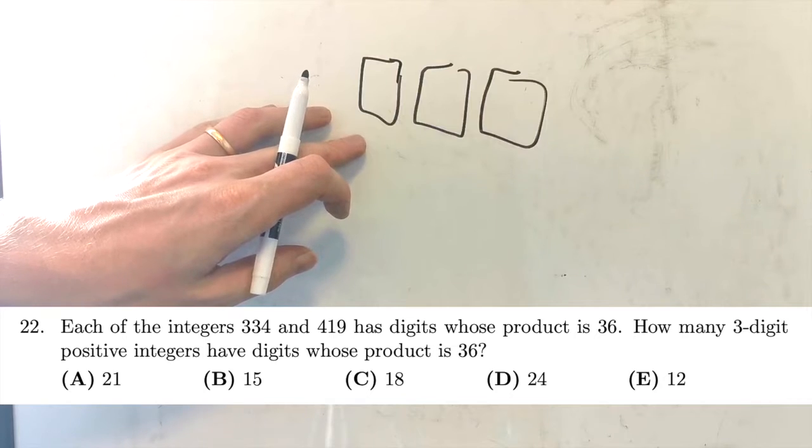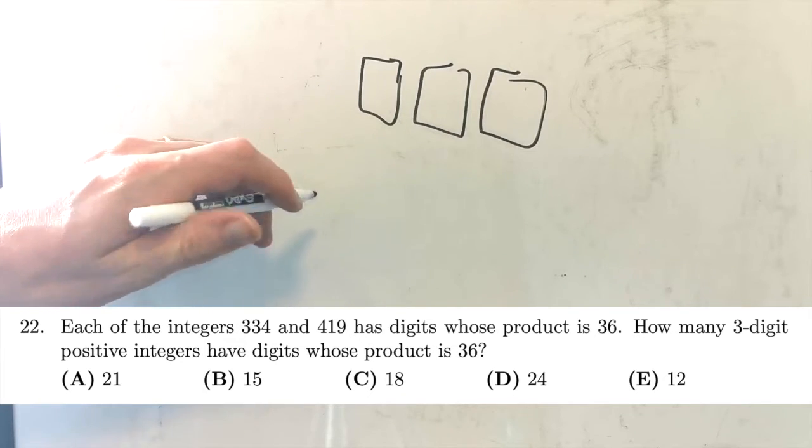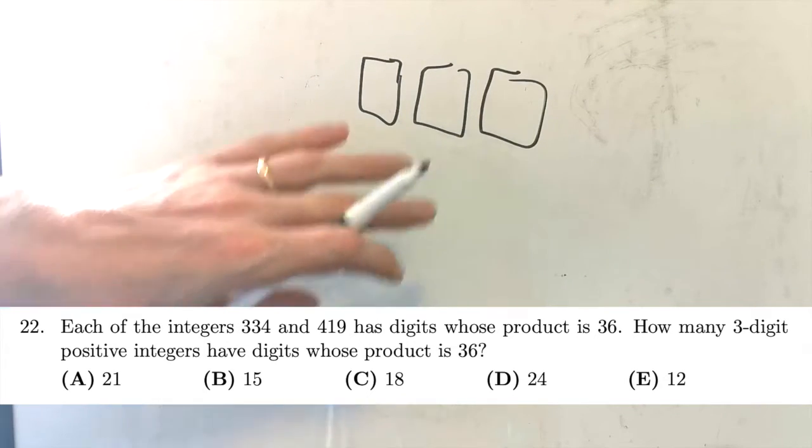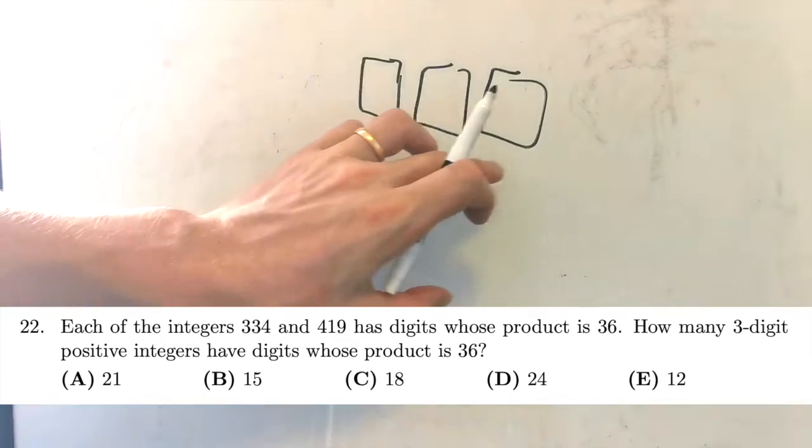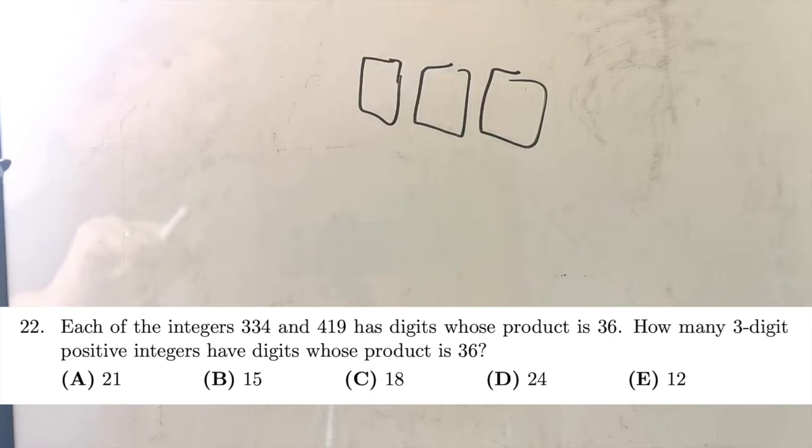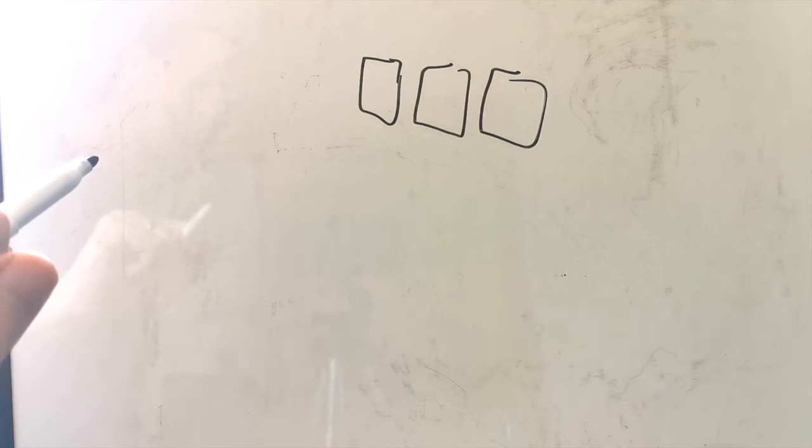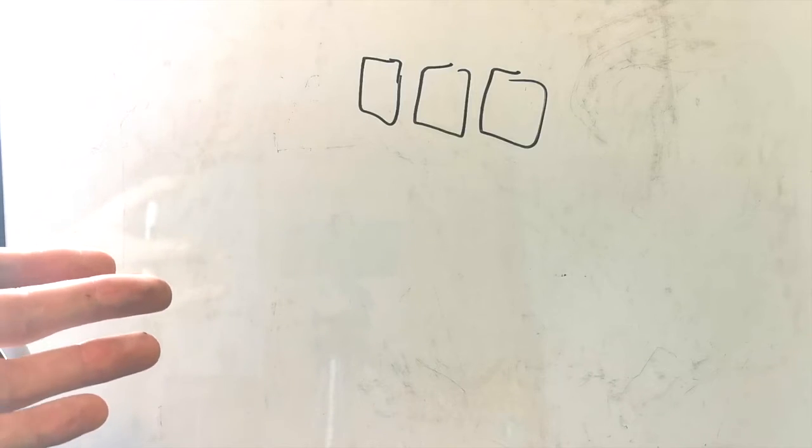And we're told that the product of their digits is 36. So let's think about what this means. If something's a digit, the biggest it can possibly be is 9, and the smallest it can possibly be is 0. So that really limits it. So now we need three of these that will multiply together to make 36. Now, there's quite a few combinations. You've probably already thought of some.